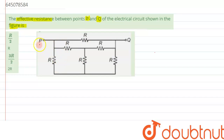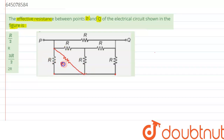As we can see, this point, this point, and this point will have the same potential because there is no element present in between these three points. So what we can do is redraw this figure — this resistance will be shifted toward this side, and this resistance will also be shifted. This connection will be lost, and this is how the circuit will look after redrawing, since all three points have the same potential.